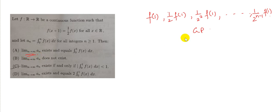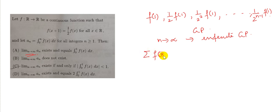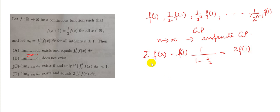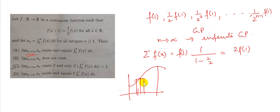As n tends to infinity, this becomes an infinite GP. The sum of all terms — sigma f(x) — equals f(1) × 1/(1−½) = 2f(1). This sigma f(x) is essentially the numerical approximation of the area under the curve starting from f(1).